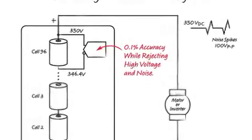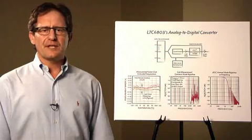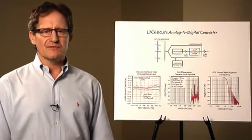In extreme cases, the top cell of the stack must be measured while rejecting 350 volts of common mode voltage, 100 volts peak to peak of common mode noise, and 1 volt peak to peak of differential noise.